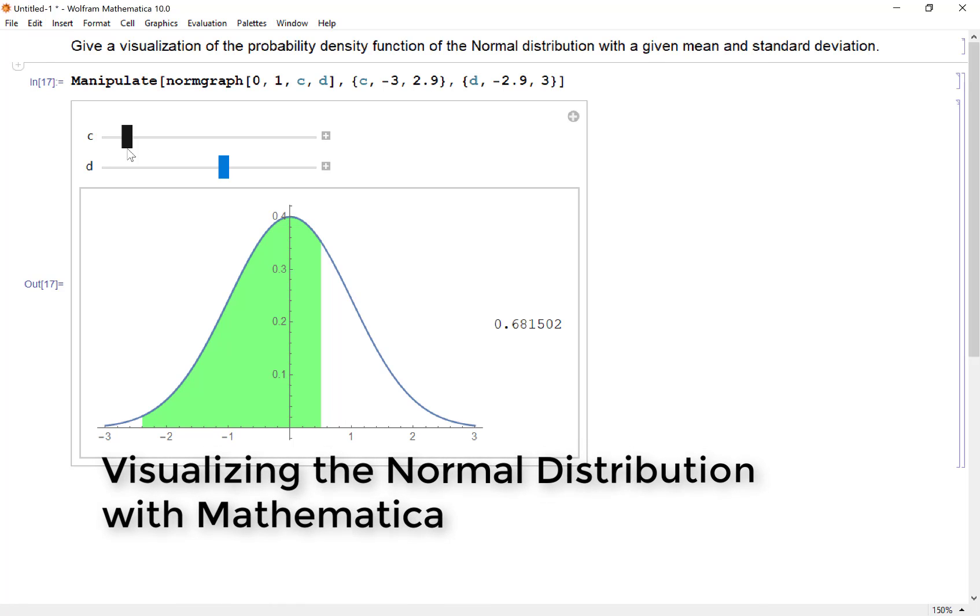Oftentimes to handle the normal distribution we're handed tables full of numbers or we use Excel or something like that. I wanted to create a visual using Mathematica to show how these probabilities relate to the geometry of what's going on and let me show you how to do that now.